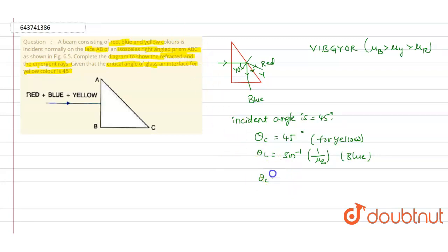And in the similar way, θc is less than 45 degrees for the blue color, and θc will be greater than 45 degrees for the red color.